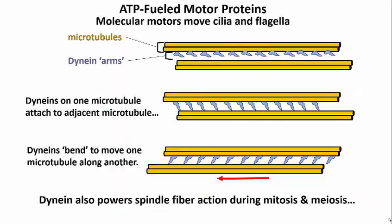Dynein is also attached to microtubules in cilia and flagella, and also in spindle fibers of mitosing or meiosing cells, where they allow one microtubule or paired microtubule complex, as shown here, to walk along or slide along another.